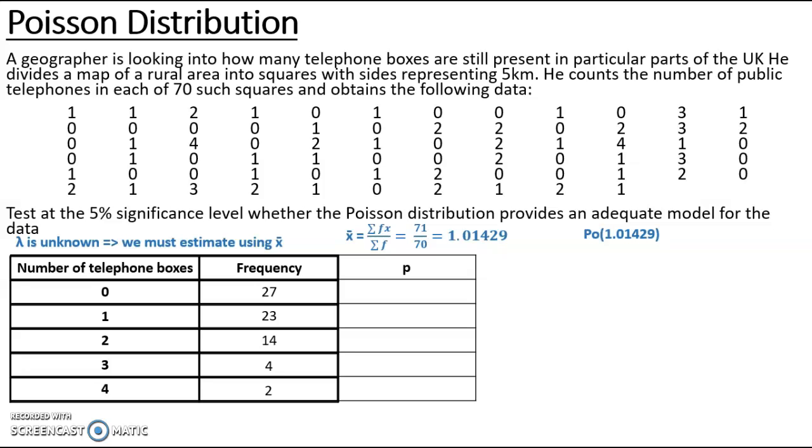Now I've got that value for lambda that I can use as my estimate, I'm going to put that in my calculator using Poisson PD and work out my probability for zero, one, two, three, and then just be careful on the last one. In this example out of the 70 squares that were looked at by the geographer, none of them had more than four telephone boxes. However, there are a lot more than four that are possible in a five by five kilometer square, so I must take that final value as four and over rather than just four itself. So for that last one, use one minus Poisson CD or just one minus the values that you've already calculated.